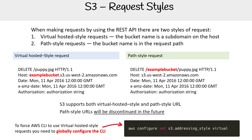You can globally set it to force it to use virtual hosted style. If you're not sure which one it's using, you can absolutely configure that. There is a point where it's very important that we make sure we use virtual, because some features of S3 will not work unless it is set to virtual hosted style. It's just a change in terms of how that data is delivered — as a subdomain in the host rather than in the path.